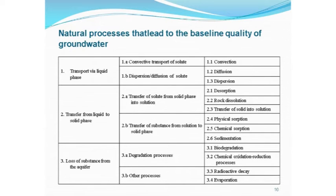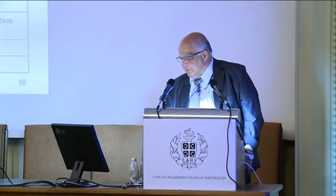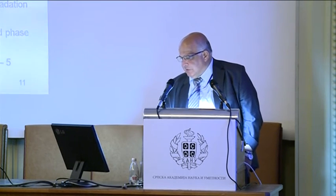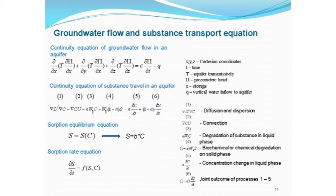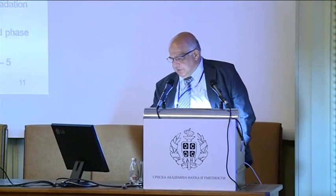The main natural processes — most of you know very well — are transport in the liquid phase: convection, diffusion, dispersion; transfer from liquid to solid phase and vice versa; and loss of substance from the aquifer. We have two fields: the hydraulic field — field of velocity — and the field of concentration, the chemical field. The third equation relates absorption of material on the solid phase to material in the water. A linear relation is used for groundwater with low concentrations, which I think is better than some other relations.